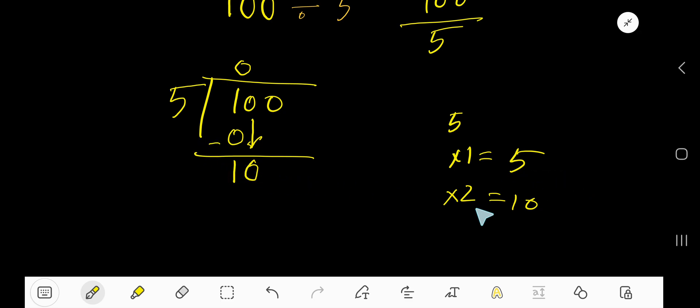So look, 5 goes into 10 how many times? 2 times. Write 2. 2 times 5, 2 times 5 is 10, or 5 times 2 is 10. If you subtract, then you are getting 0.